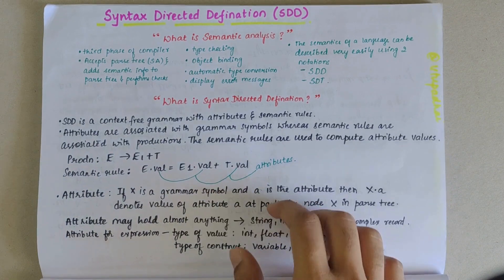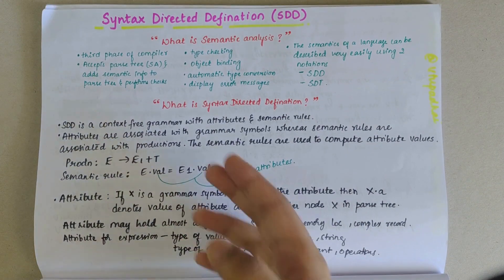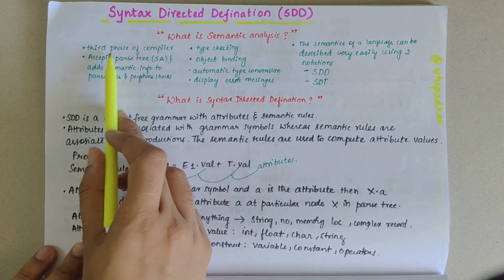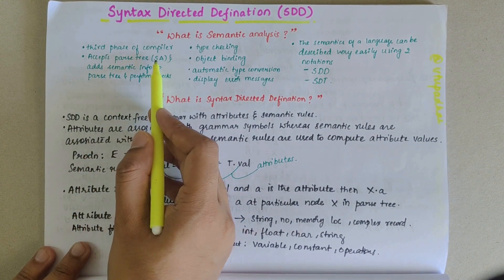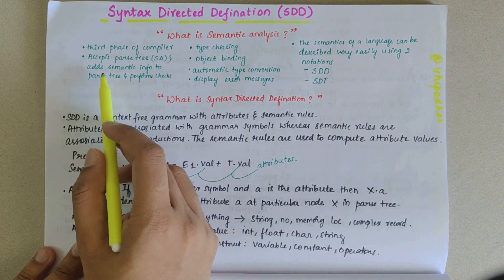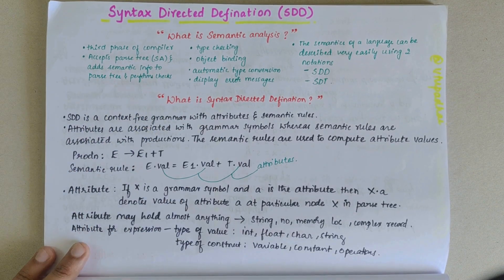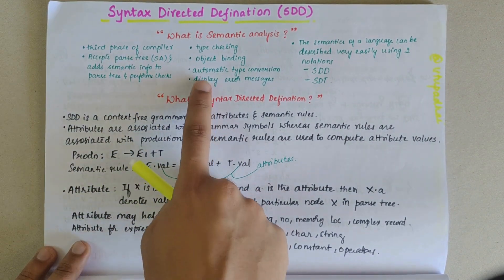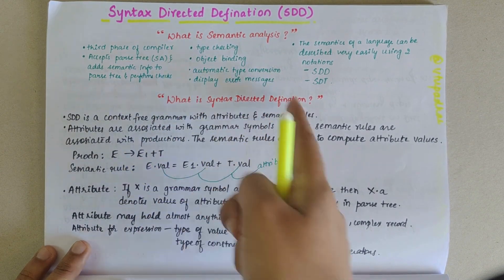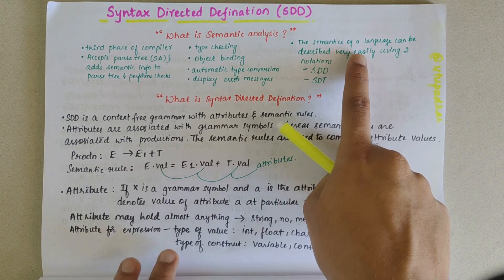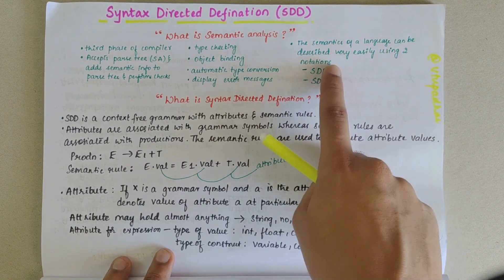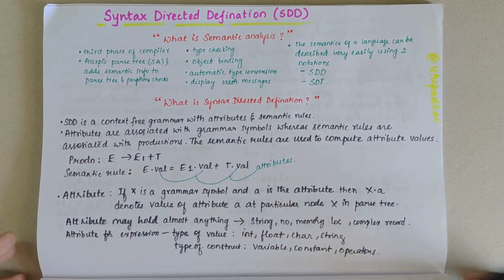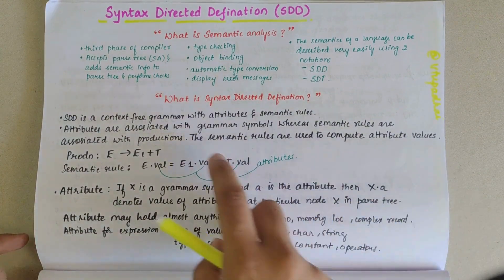In this video, we will be looking into the Syntax Directed Definition topic. Before moving on to SDD, we need to understand what semantic analysis is. It is the third phase of the compiler. It accepts a parse tree as input, adds semantic info to the parse tree, and performs required checks such as type checking, object binding, automatic type conversion, and displaying errors. The semantics of a language can be described using two notations: Syntax Directed Definition and Syntax Directed Translation. In this video, we will be looking into Syntax Directed Definition.